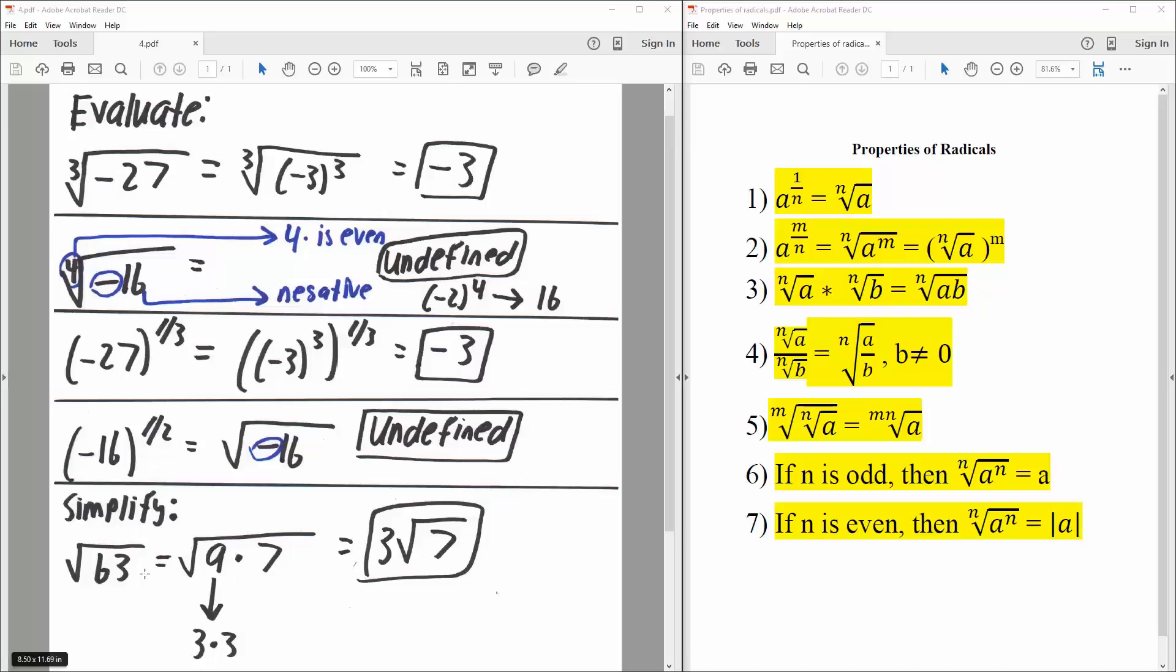One way we can do is say square root of 9 times 7. We know that 3 squared, 3 times 3, is 9, so we could do 3 square root of 7. This simplifies it a little bit, and that's about it.